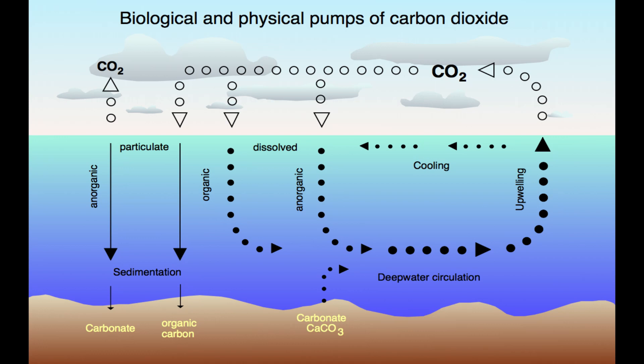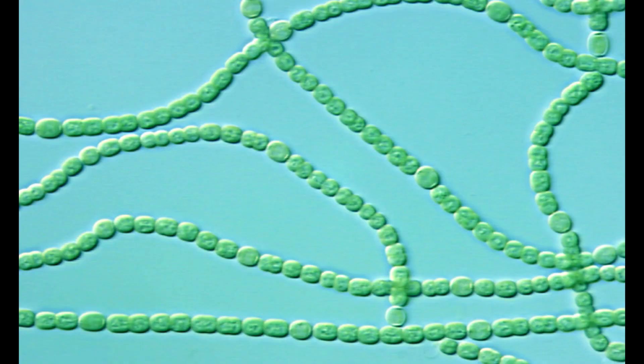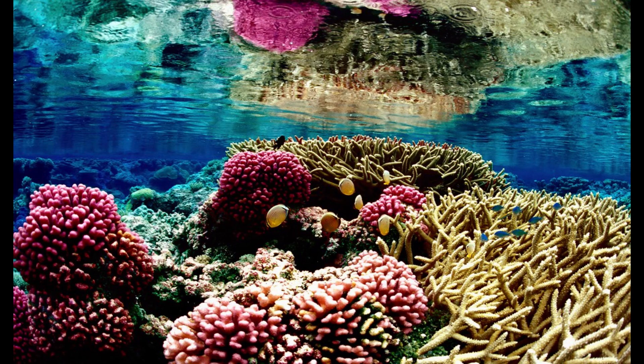The ocean plays a huge role in carbon storage. About a third of the carbon we as humans release into the atmosphere is stored in the ocean. The ocean also produces a significant amount of oxygen for our atmosphere thanks to photosynthetic bacteria and algae, like the cyanobacteria. Coral reefs are incredibly diverse and productive ecosystems, home to many ecological processes and interactions.